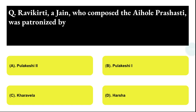Next question: Ravi Kirti, a Jain who composed the Aiholi inscription, was patronized by whom? Option A: Pulakesi II, Option B: Pulakesi I, Option C: Garavilla, Option D: Harsha. The correct answer is option A, that is Pulakesi II.